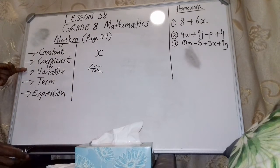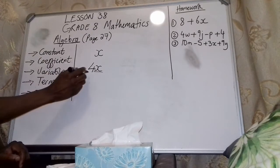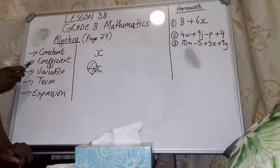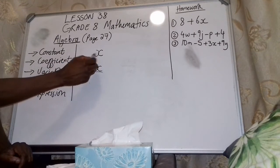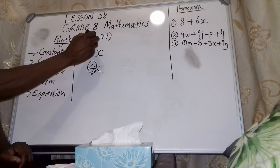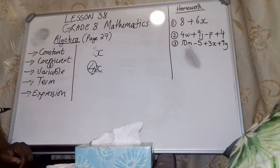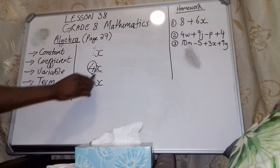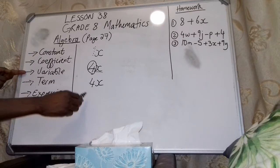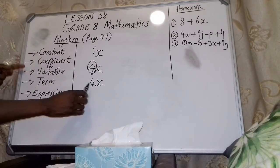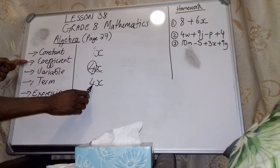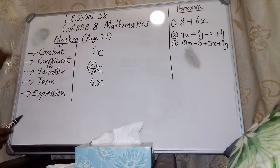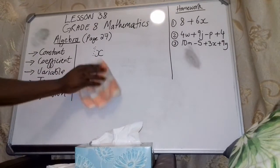This X we call a variable. The number in front we call a coefficient. So for plain X, do we have a coefficient? Yes — there is an invisible coefficient of one. So again, 4X is an expression with one term. Is there a variable? Yes, X is the variable. Is there a coefficient? Yes, 4 is the coefficient.